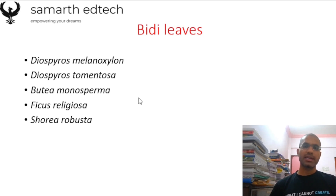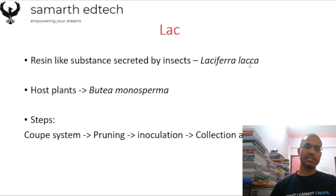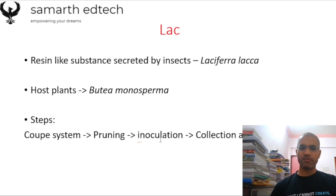Lac is a resin-like substance secreted by the insect Laccifer lacca. The host plant is Bauhinia monosperma. The steps of lac production are: trees are planted in the coppice system, then pruning is done, then inoculation, and finally collection and storage. Just remember the names of these steps.